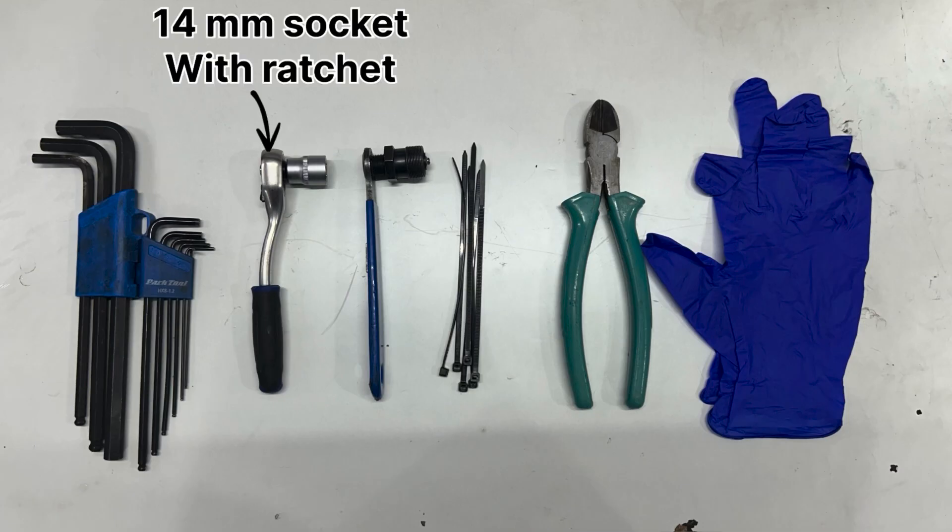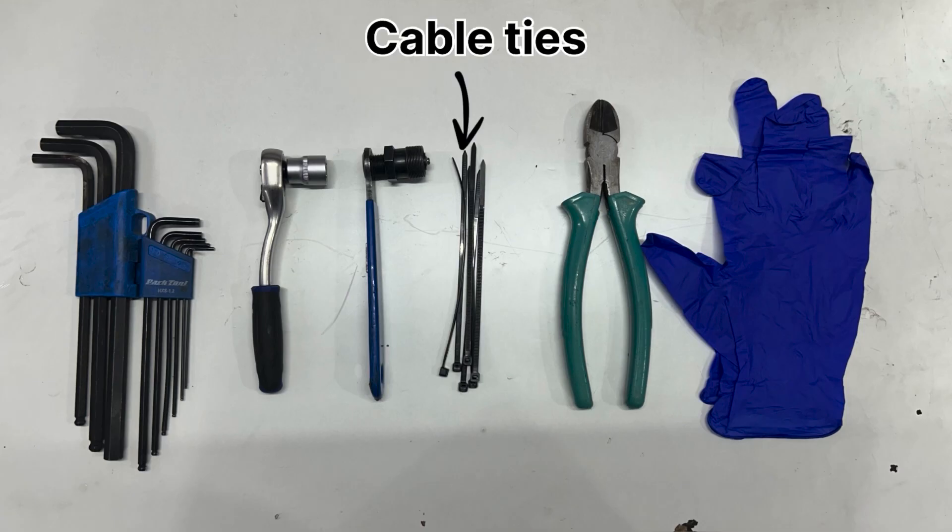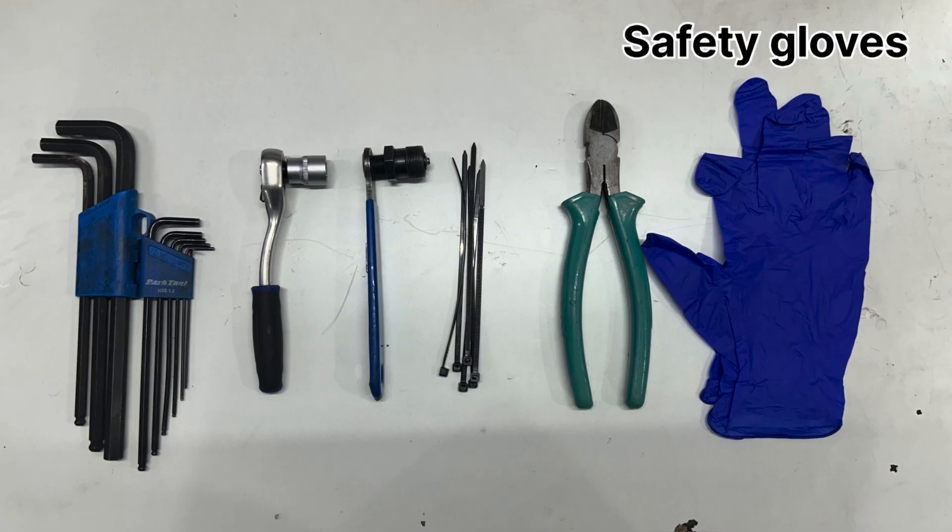Allen key set, ratchet with a 14mm socket, crank puller, cable ties, cable cutter, pair of gloves, and spanner set.